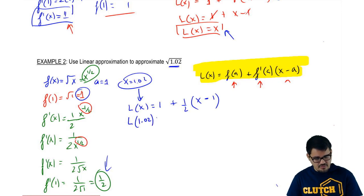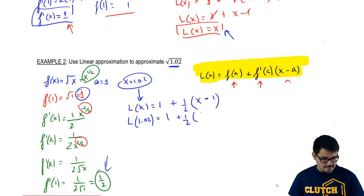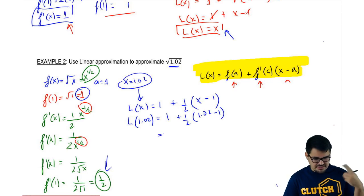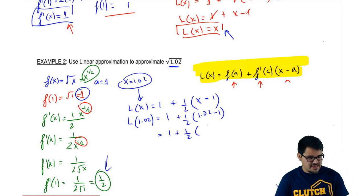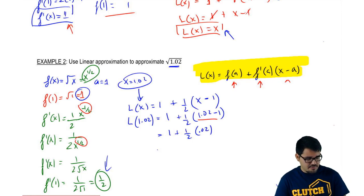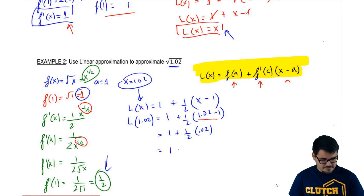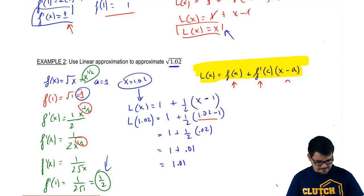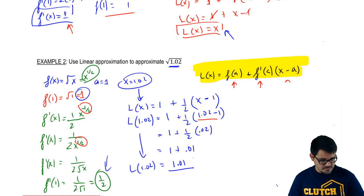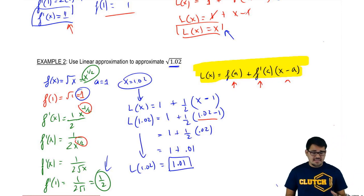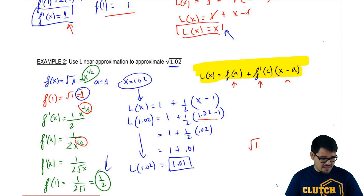Now that we have our general L of x, we can use it to approximate square root of 1.02 by plugging in x equals 1.02. So L of 1.02 equals 1 plus one-half times 1.02 minus 1. Since 1.02 minus 1 is just 0.02, and 0.02 divided by 2 is 0.01, we get 1 plus 0.01 equals 1.01. So our linearization gives us an approximation of 1.01.